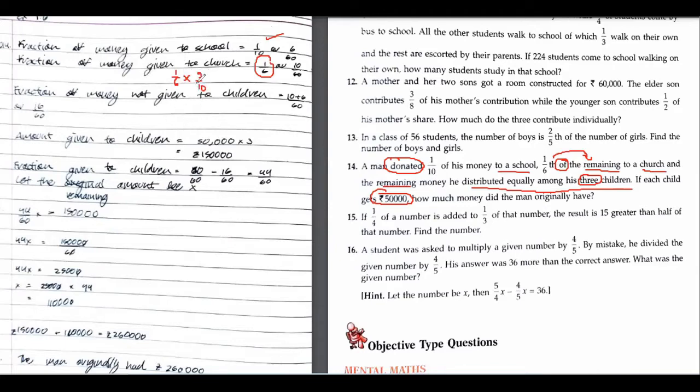Okay. So nine upon 60. Yeah, you can reduce it also. You can take nine upon 60 if you are taking LCM of 60. That is fine with me. But you can reduce it also. Three times three, three times two. So it would be three upon 20. Yes. Three upon 20.